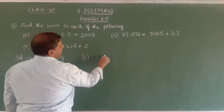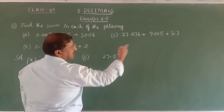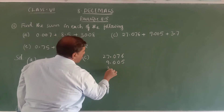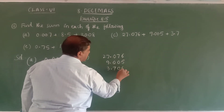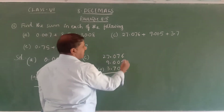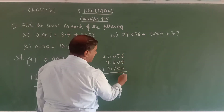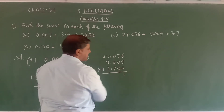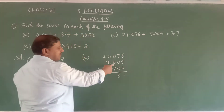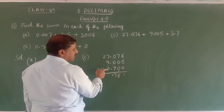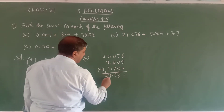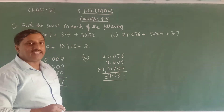The second part: add 27.076 + 9.005 + 3.7. For 3.7, there is no digit in the hundredths or thousandths place, so take them as 0. From the right: thousandths 6 + 5 + 0 = 11, write 1 carry 1. Hundredths 7 + 0 + 0 + 1 = 8. Tenths 0 + 0 + 7 = 7, plus carry gives 8. Wait — ones: 7 + 9 + 3 with carry = 19, carry 1. Tens: 2 + 1 = 3. The answer is 39.781.